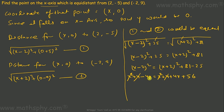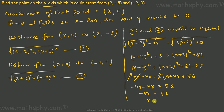The x squared terms cancel. We are left with minus 4x on the left. Bringing terms together: minus 4x minus 4x equals 56, so minus 8x equals 56, giving x equals negative 7.